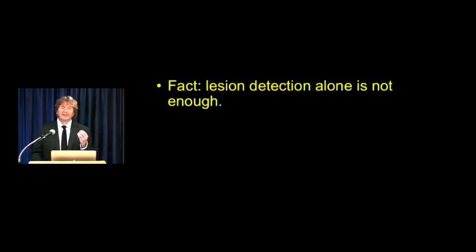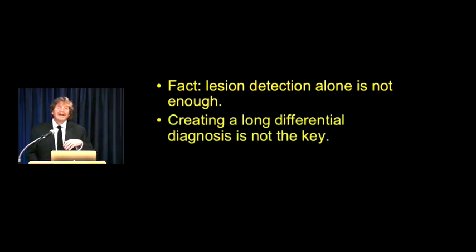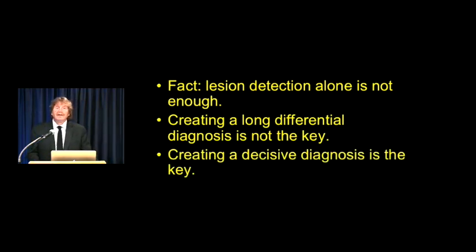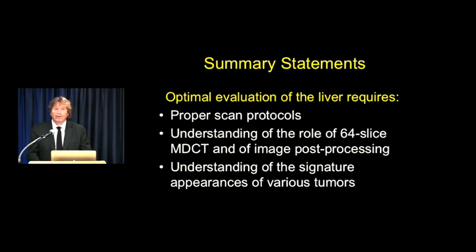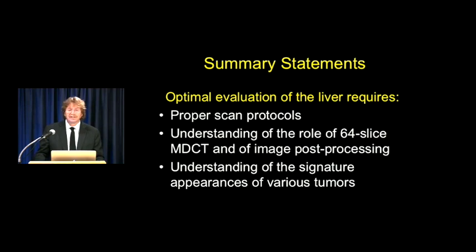What did we say in this lecture? We can do better than ever for lesion detection with newer scanners and good protocols. But lesion detection alone is not enough - creating a long differential list is not going to make your referring doctors happy because you're not really telling them anything. You need to be definitive and decisive in reaching a diagnosis. You've got to really think about: is the lesion enhancing, is it homogeneously enhancing, is there a feeding vessel, how does it look on arterial, venous, and delayed phases? If we do this correctly with proper protocols, using 3D imaging and understanding the signatures of various tumors both benign and malignant, we're going to do a great job as a consultant to our referring physicians and for our patients.